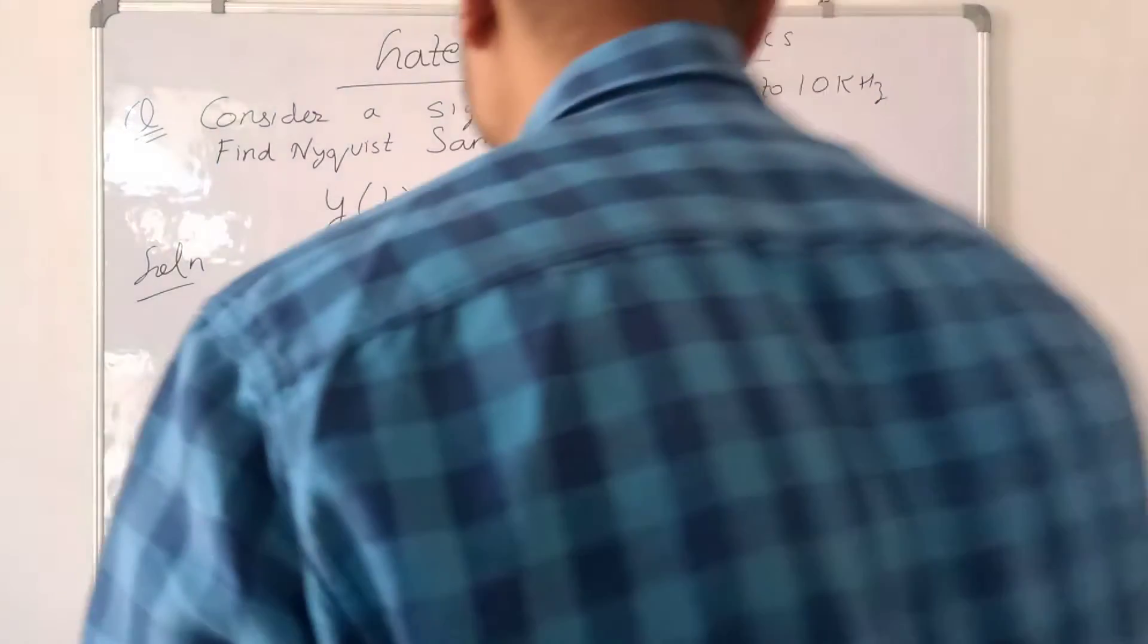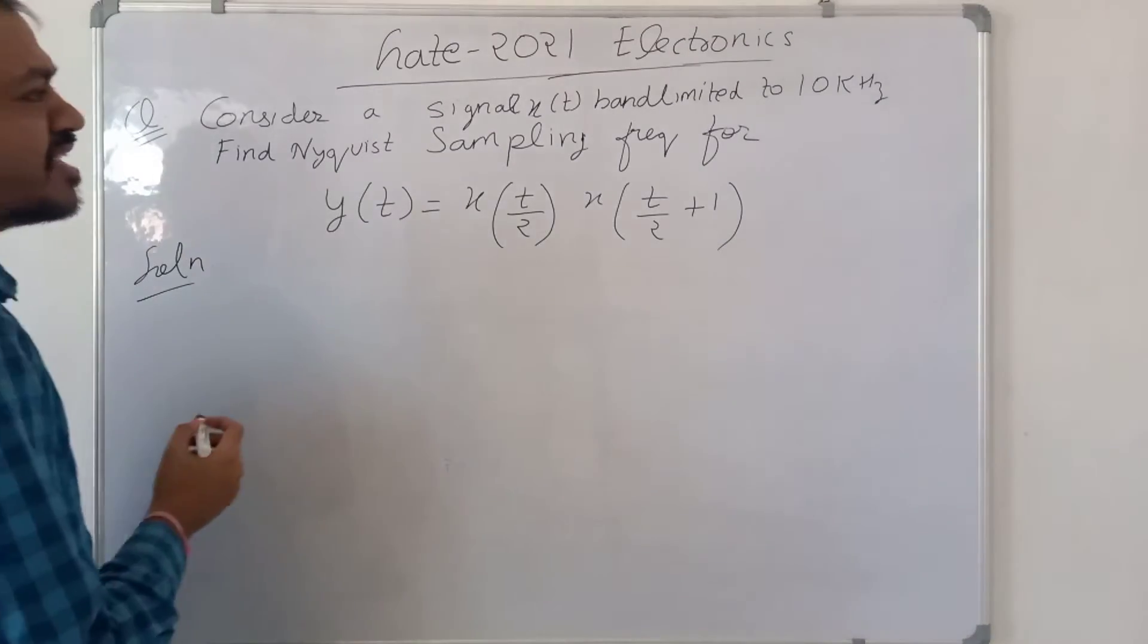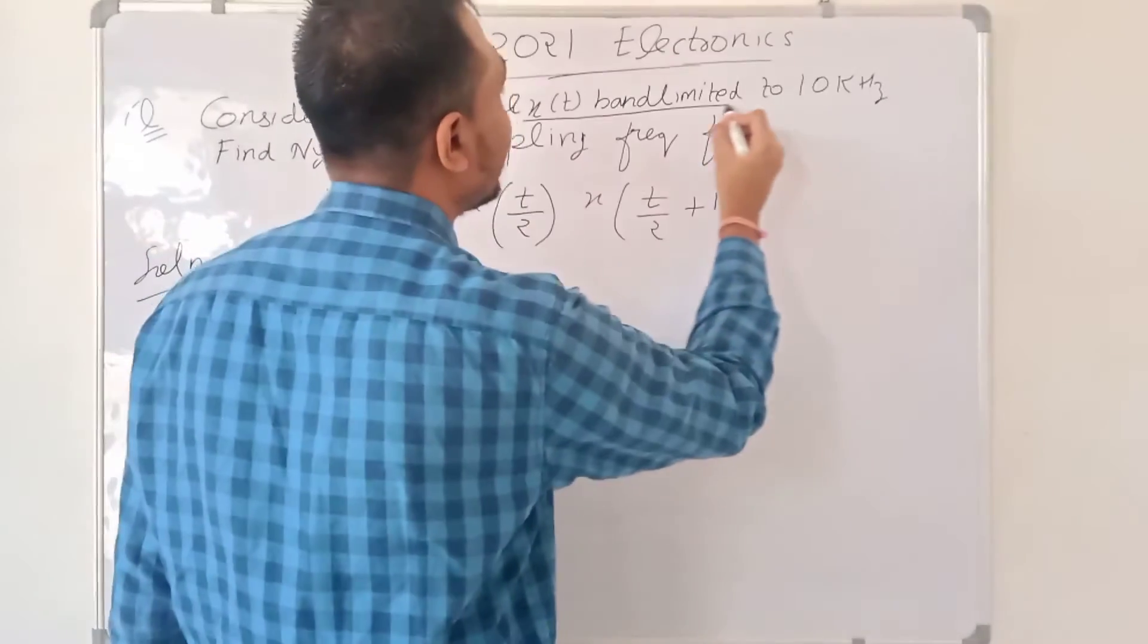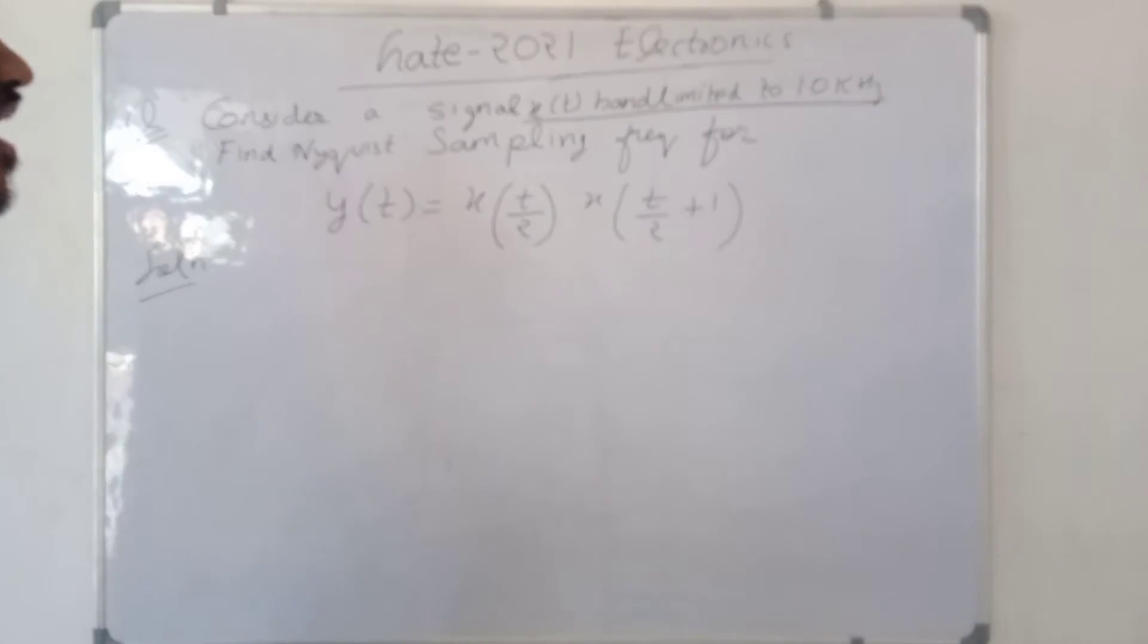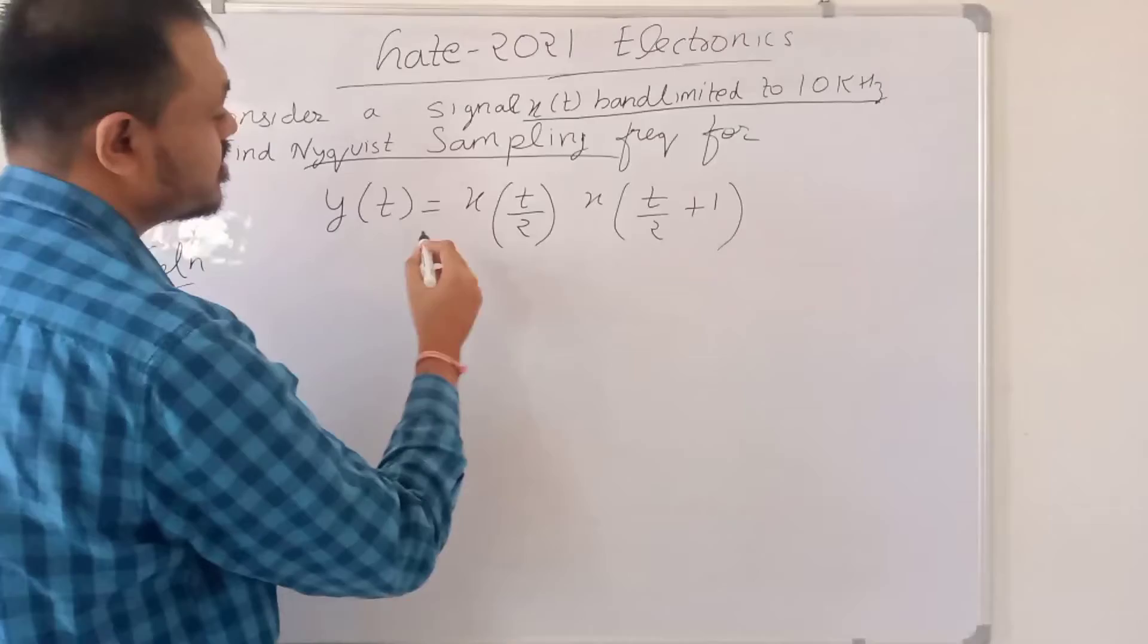This question is from GATE 2021 Electronics. It says there is a signal X(t) band limited to 10 kHz, and we have to find the Nyquist frequency for Y(t).